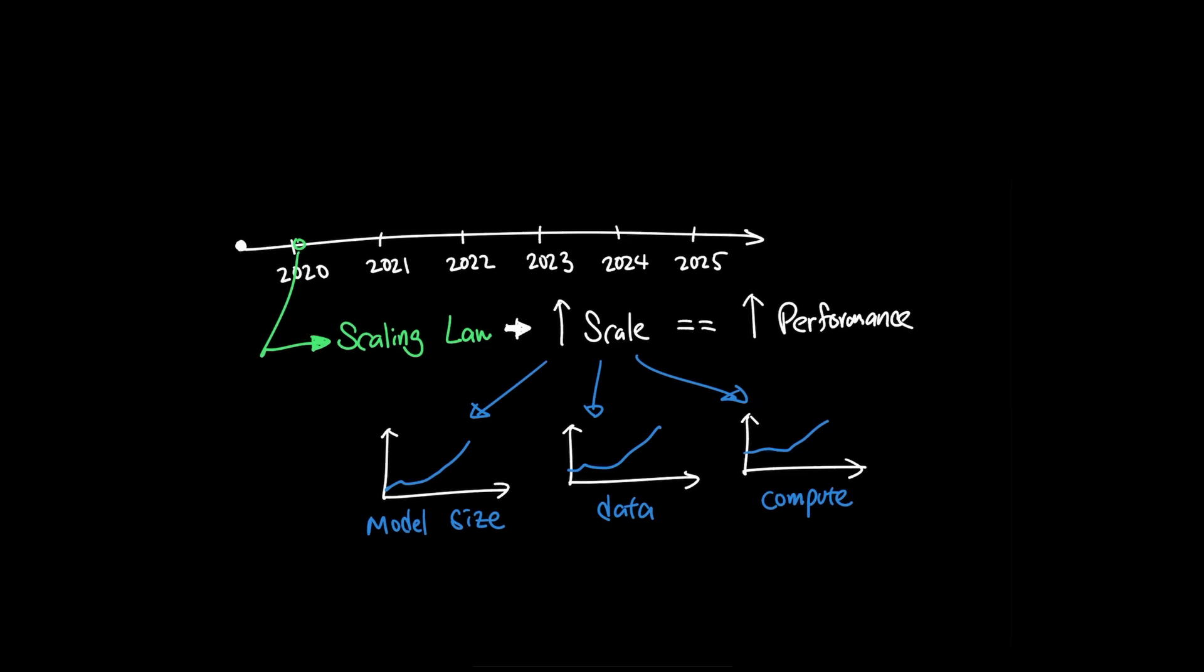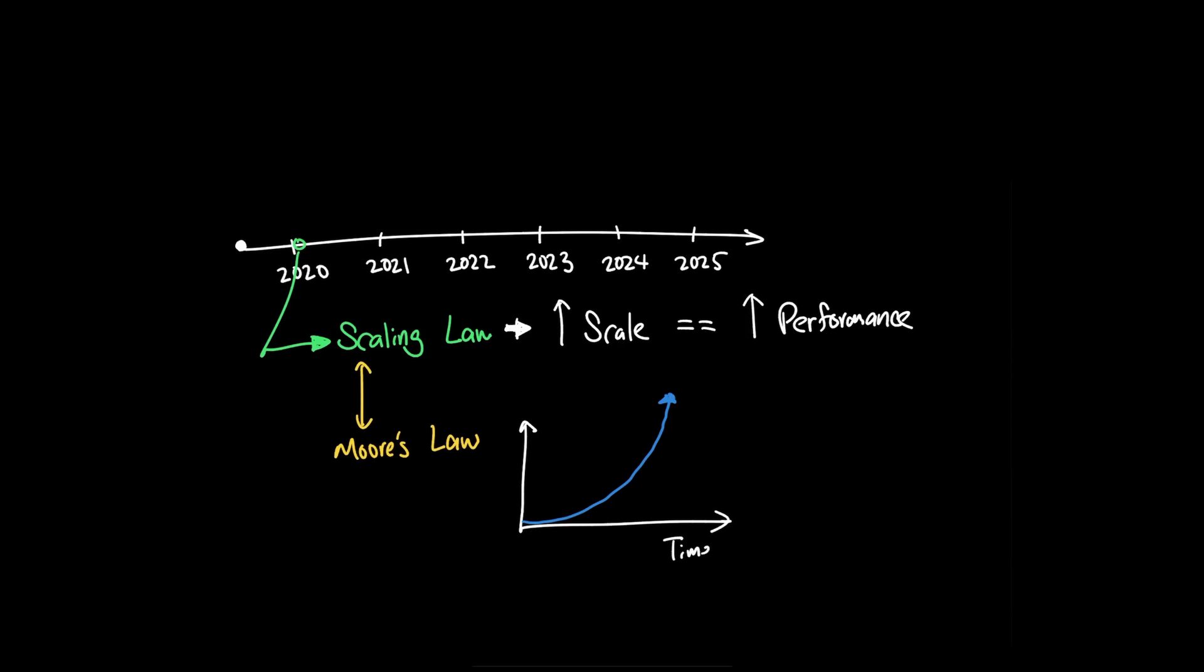And a lot of people confuse Scaling Law with Moore's Law, saying that large language models will just get better over time. So they look at groundbreaking models like Quen3 Coder to confirm their bias.